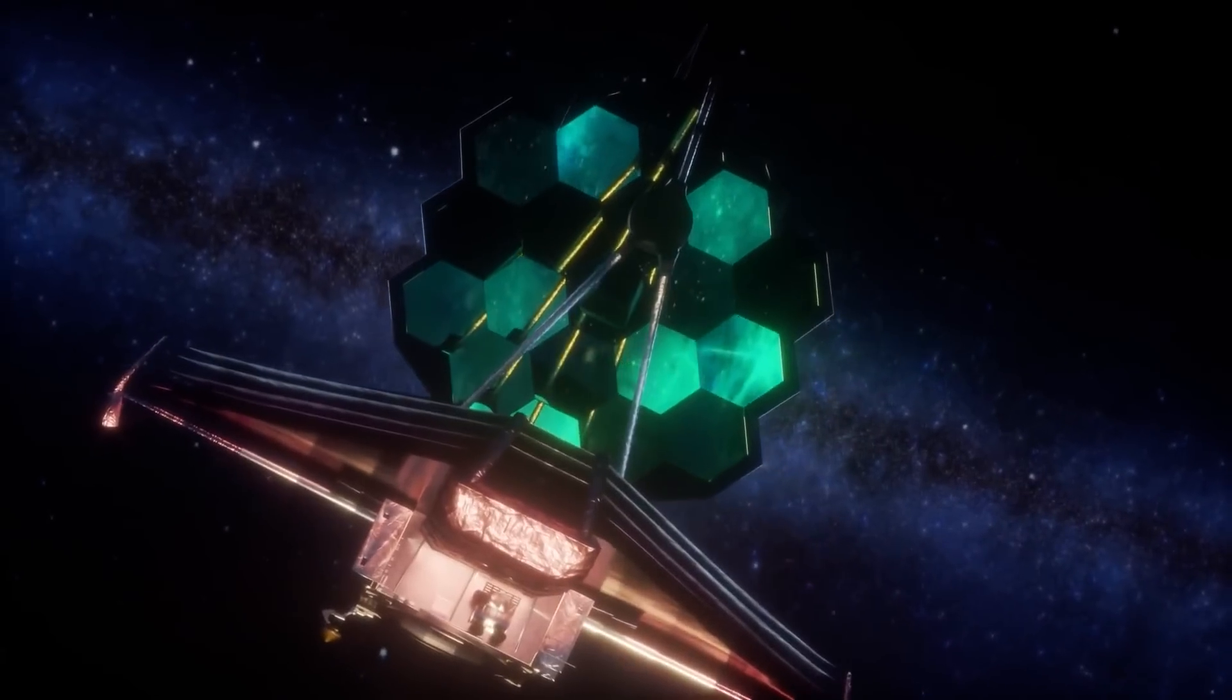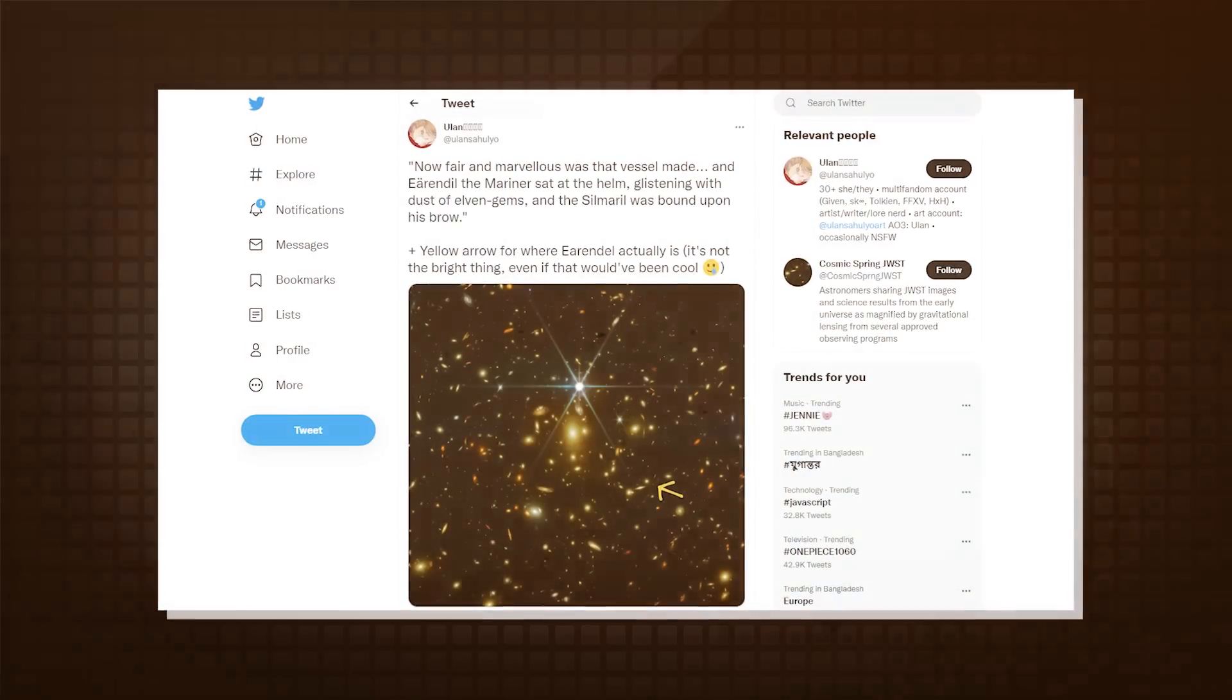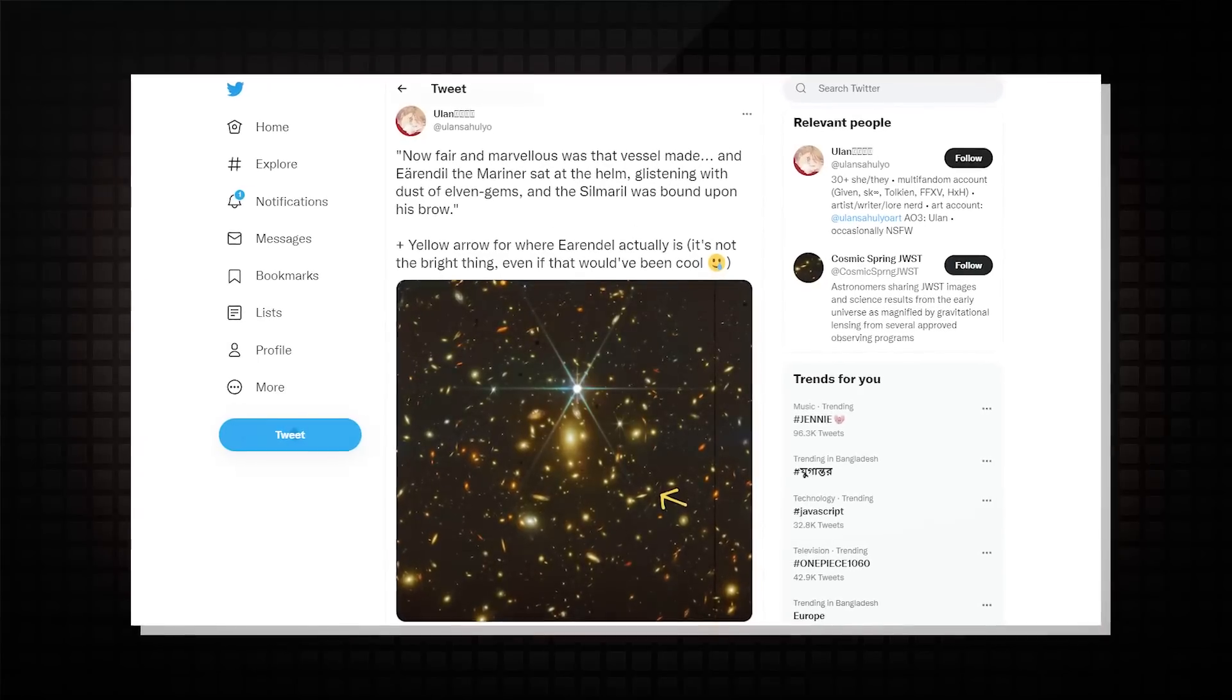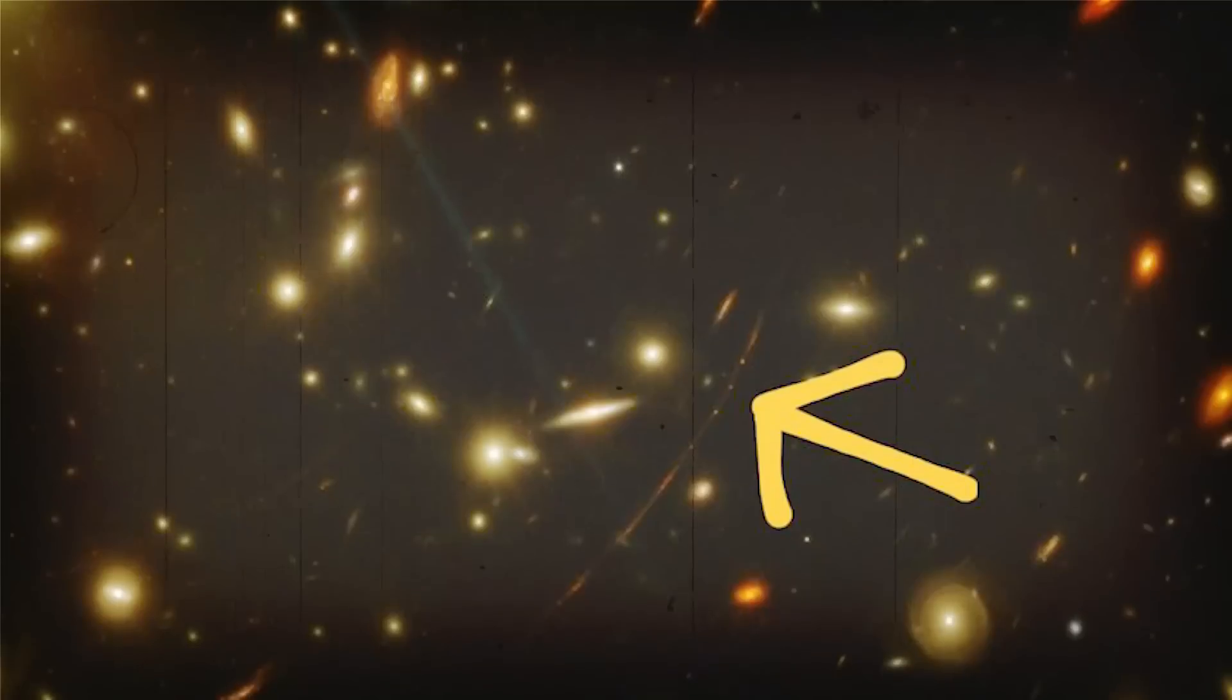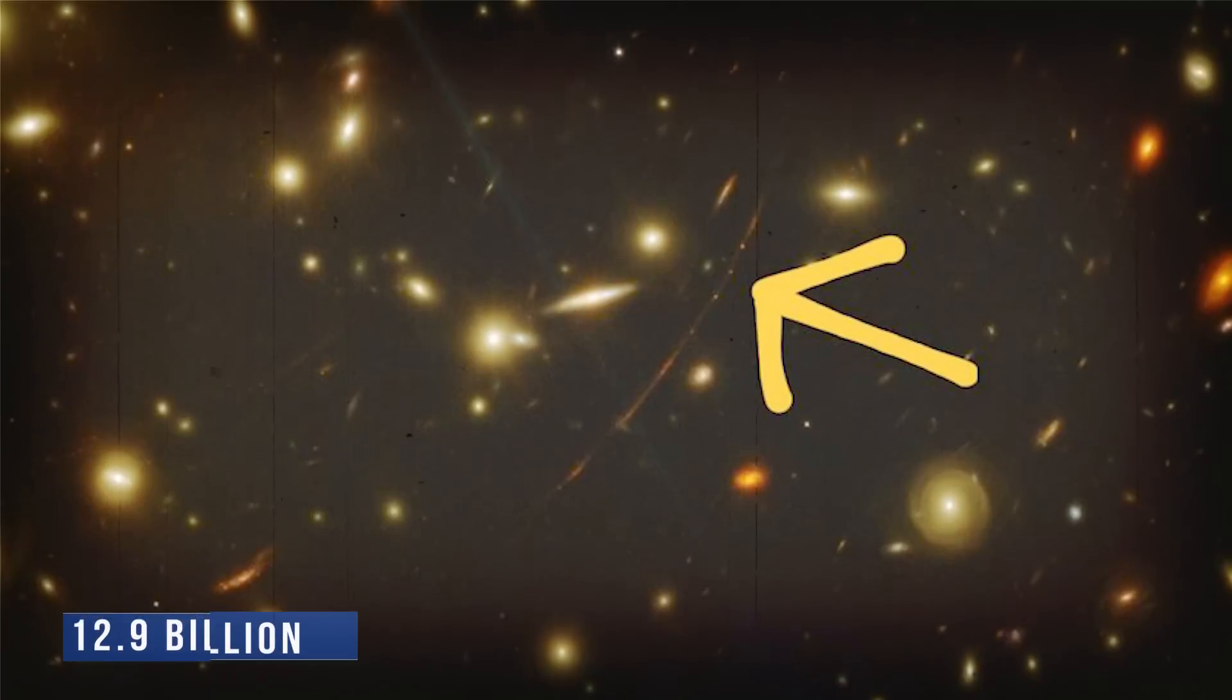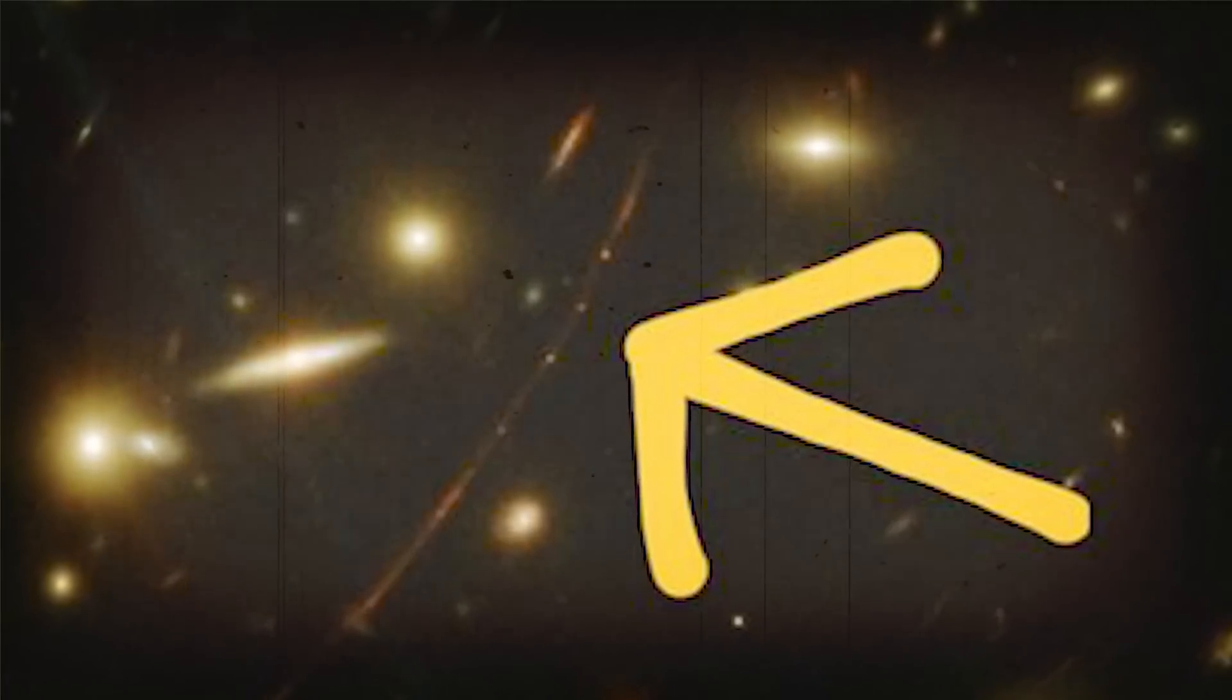It may be difficult to detect the star in the new James Webb Space Telescope image that was tweeted on August 2nd by a group of astronomers using the account Cosmic Spring JWST. The star's light took 12.9 billion years to reach Earth.